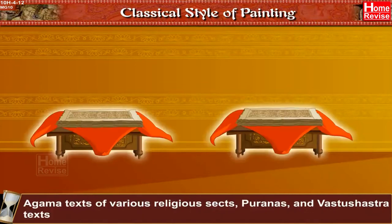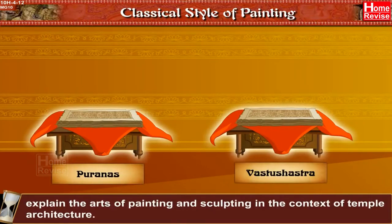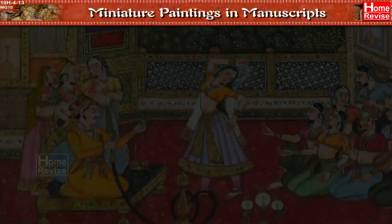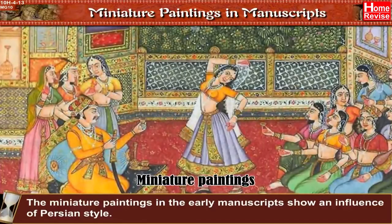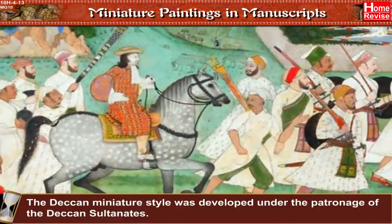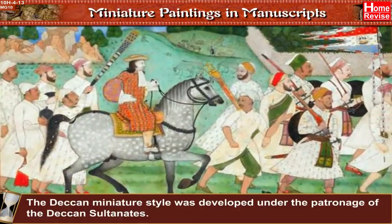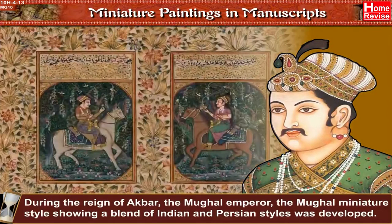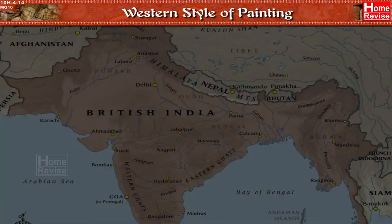Agama texts of various religious sects, Puranas, and Vastu Shastra texts explain the art of painting and sculpting in the context of temple architecture. Regarding miniature paintings in manuscripts, the early manuscripts show an influence of Persian style. The Deccan miniature style was developed under the patronage of the Deccan Sultanates. During the reign of Akbar the Mughal emperor, the Mughal miniature style — showing a blend of Indian and Persian styles — was developed.